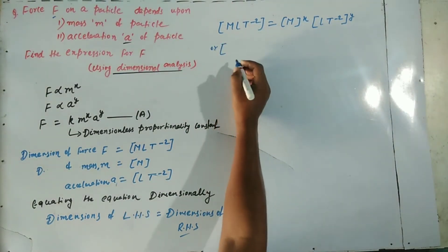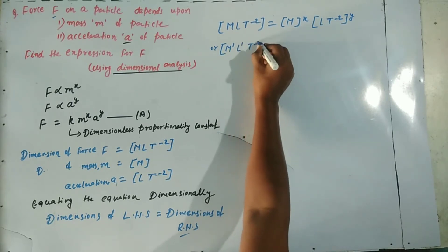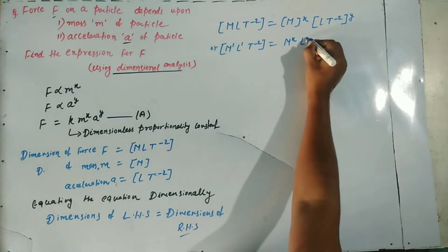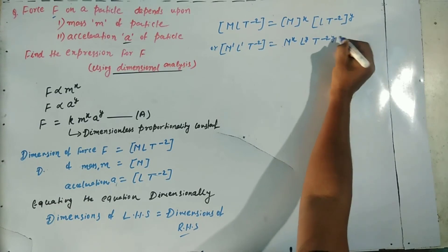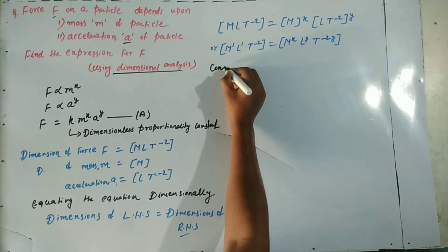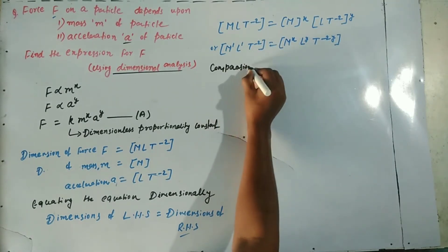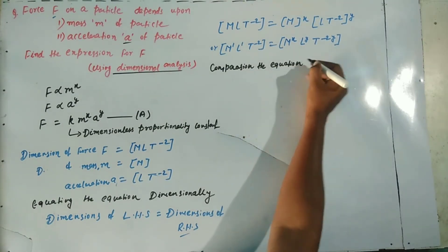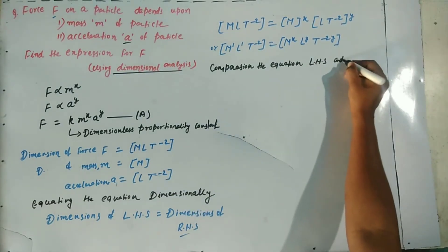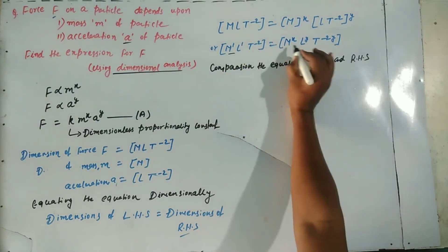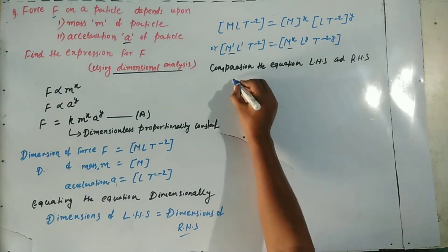When we expand this, M to the power 1, L to the power 1, T to the power minus 2 equals M to the power X, L to the power Y, T to the power minus 2Y. Now comparing this equation, we find the values of X and Y. Comparing M terms: M to the power 1 equals M to the power X.